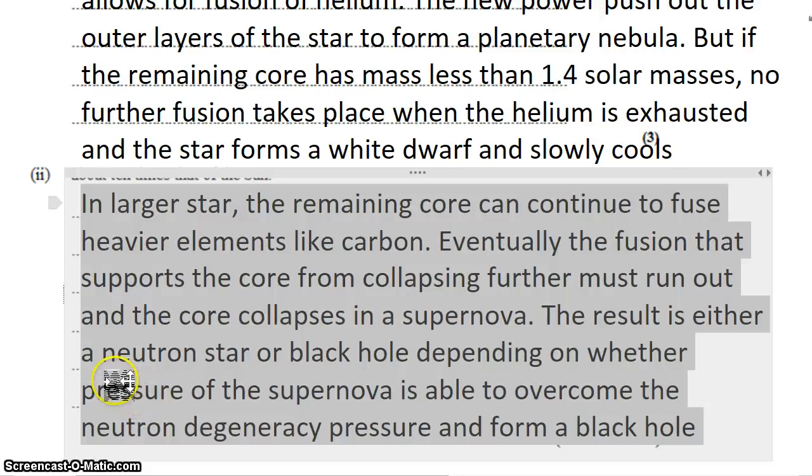So if you can't overcome the neutron degeneracy pressure from a very large core collapsing, then you form a neutron star, not a black hole.